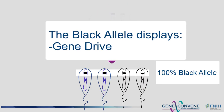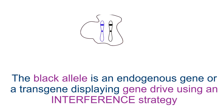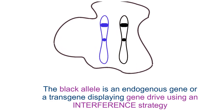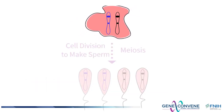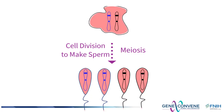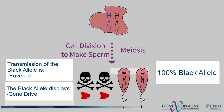Now let's consider the second strategy to achieve a transmission advantage: interference. Consider the black allele which displays gene drive using an interference strategy. In this case, the black allele expresses a gene product that will interfere with the formation of sperm harboring the blue allele. The black allele's gene product interferes with the formation of sperm containing the blue allele, resulting in only sperm with the black allele — a clear transmission advantage. This strategy is widely used in natural gene drive systems, but has been challenging to recreate or mimic in the laboratory.